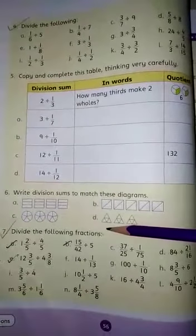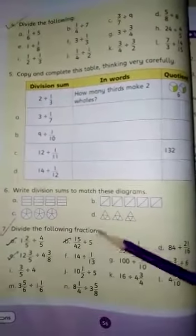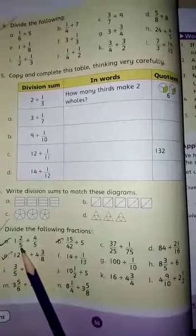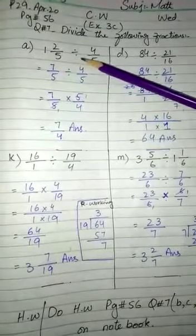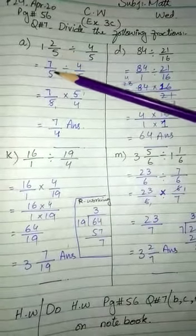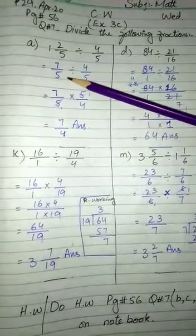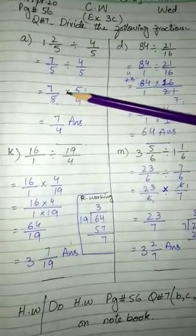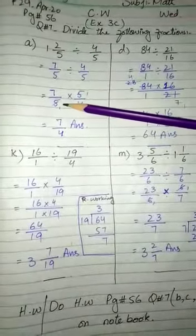Let's move to our question number 7: divide the following fractions. First, our fraction is 1 2/5 divided by 4/5. Solution of part a: We have the mixed fraction 1 2/5. Convert to improper fraction: 5 times 1 is 5, plus 2 is 7, so 7/5 divided by 4/5. What are we going to do now with the rule of dividing fractions? First fraction we write as it is.